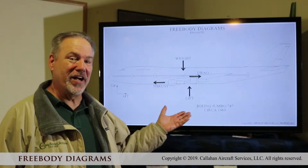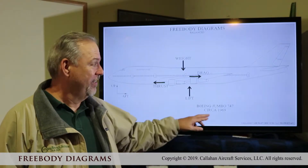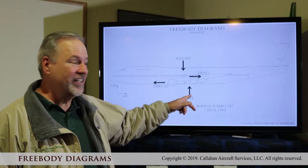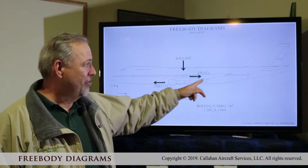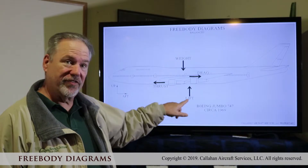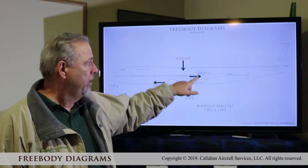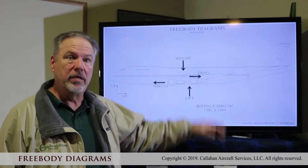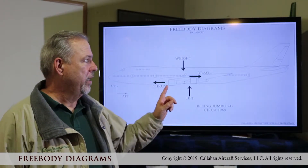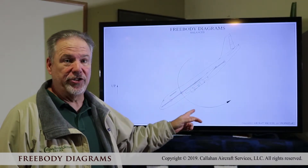Now we're going to do a free body diagram of an airplane — a 747 from 1969. We have lift, weight, drag, and thrust. Thrust from the engine, lift from the wing, weight of the airplane, and drag being in the way. If you think that's balanced, you're going to crash.